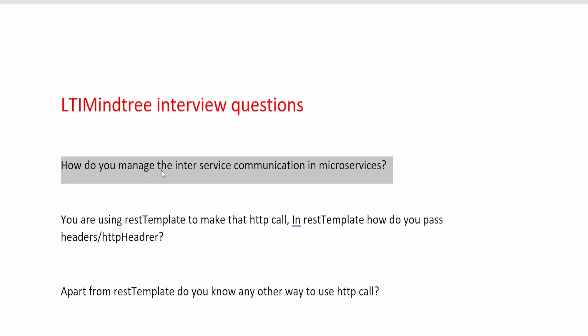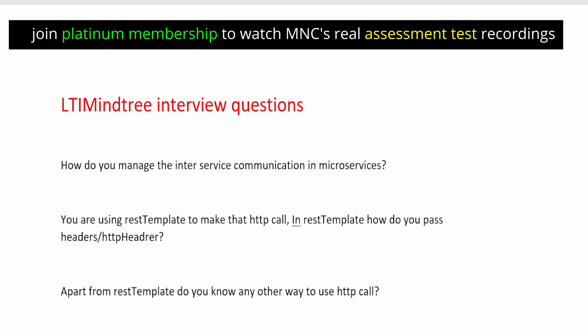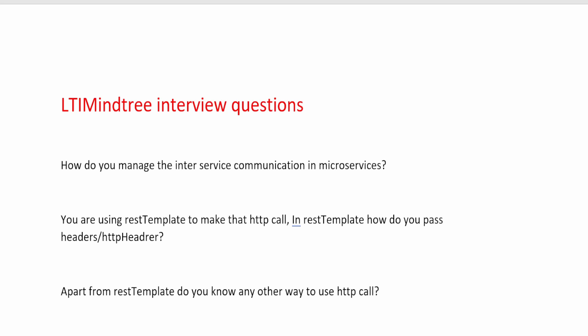Our first question is: how do you manage the inter-service communication in microservices? There are two ways microservices can communicate with each other — one is synchronous and the other is asynchronous communication. For synchronous communication, microservices use REST or gRPC protocols, and the ways to implement it include REST template and web client. For asynchronous communication, a message broker is used — it can be RabbitMQ, Apache Kafka, or ActiveMQ.